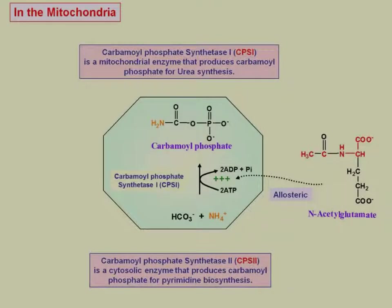The first step in urea production is the condensation of ammonia with bicarbonate through carbamoyl phosphate synthetase 1, CPS1, at the expense of two ATPs to form carbamoyl phosphate. There is a carbamoyl phosphate synthetase 2 found outside of the liver, and it's used to produce pyrimidines.